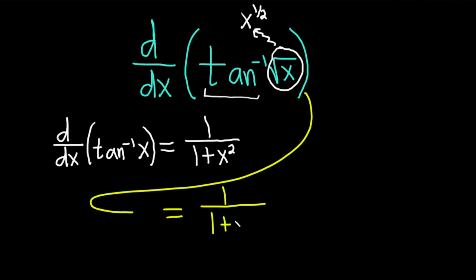Evaluated at the inside, so 1 plus... instead of x, we have this square root of x. This is all being squared, times the derivative of the inside. And now we're going to think about it as x to the 1/2 so we can differentiate using the power rule.